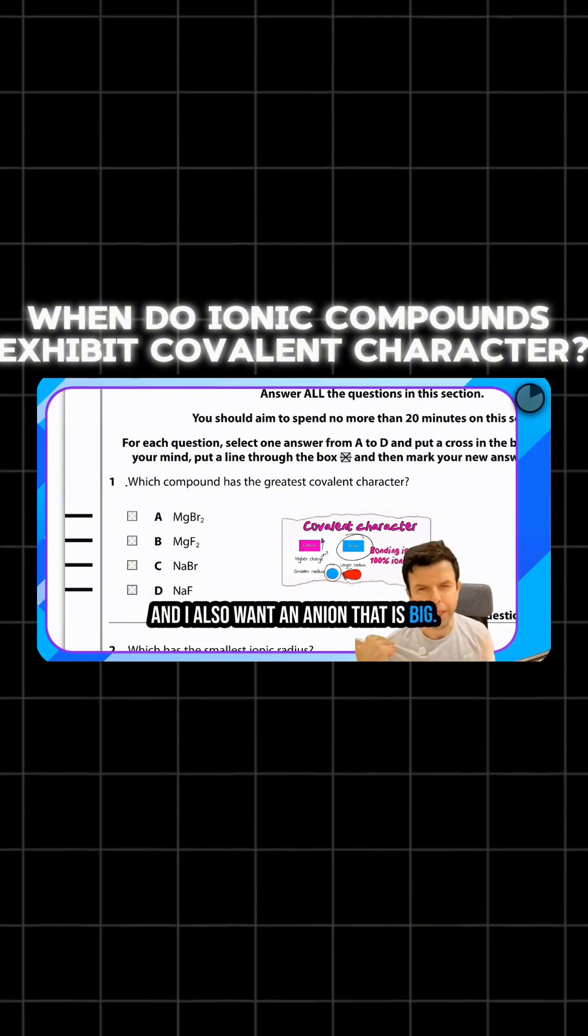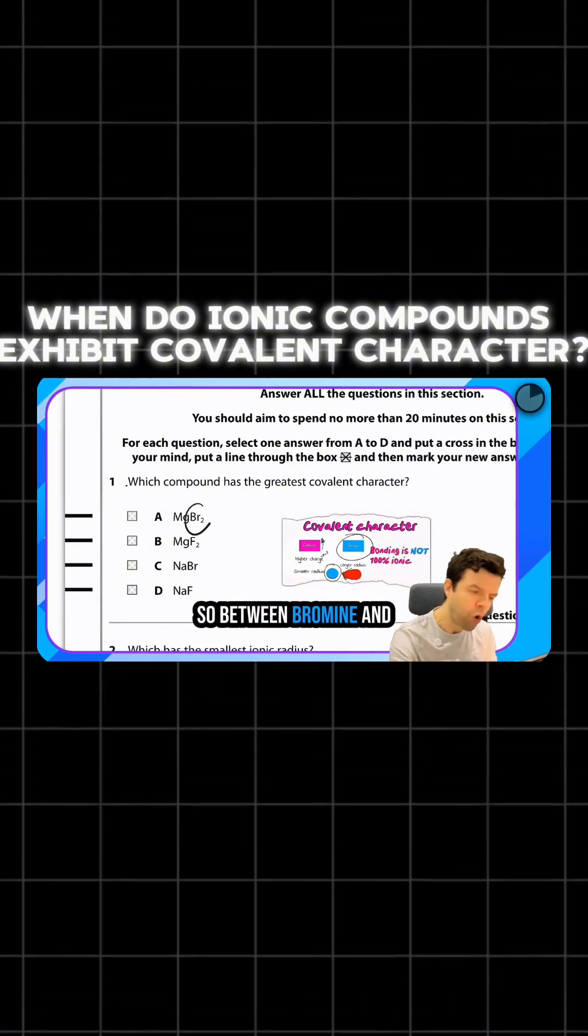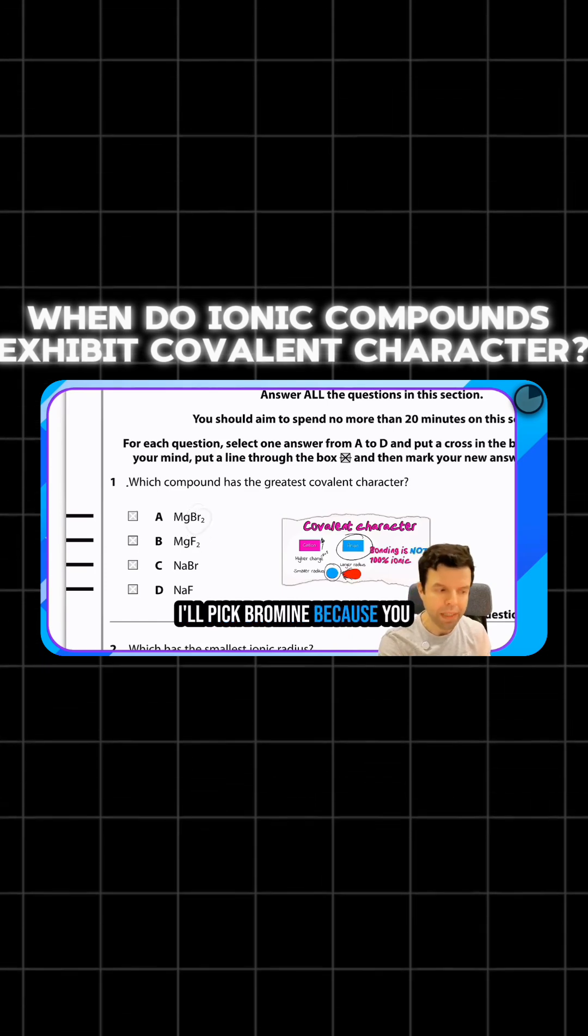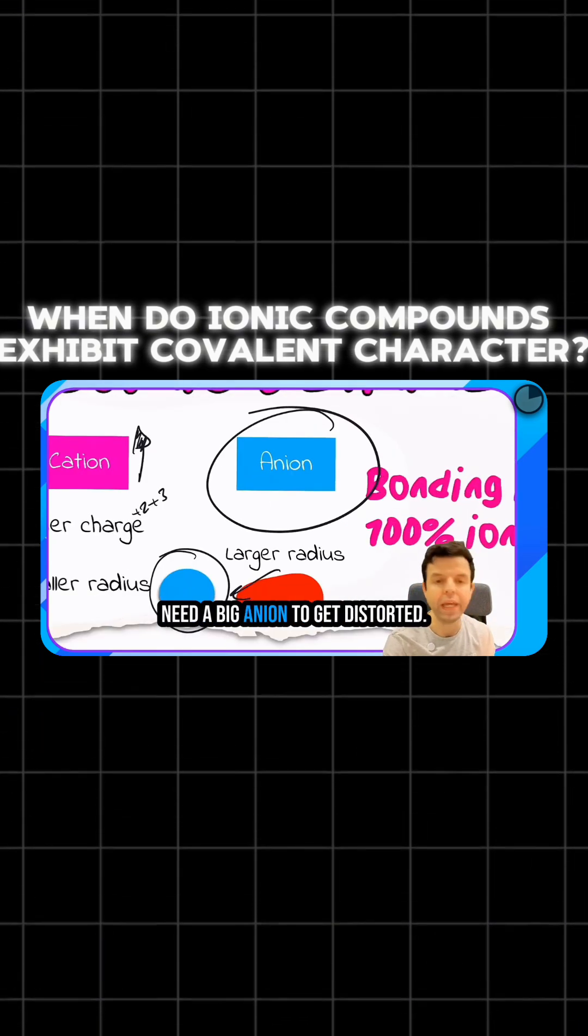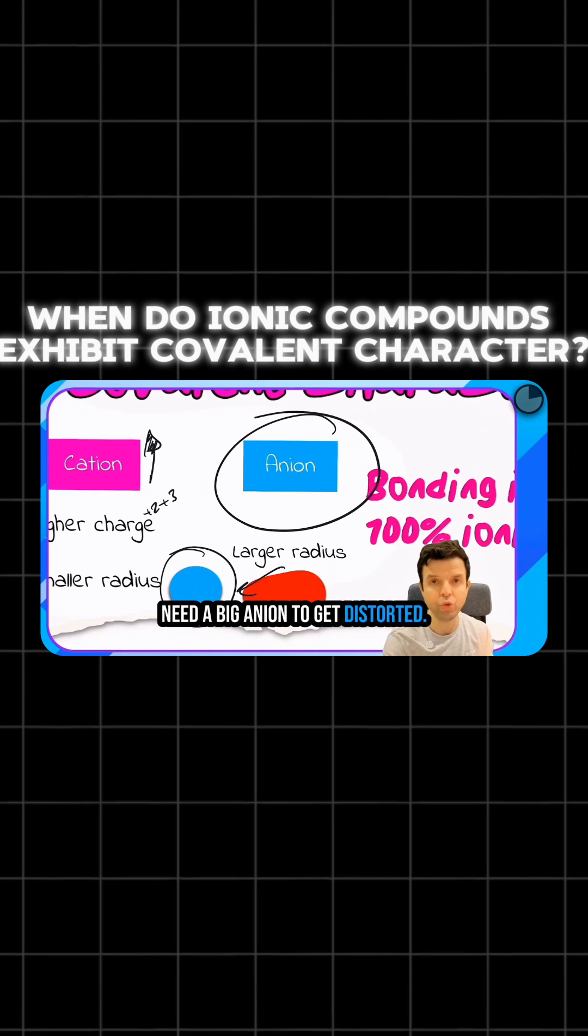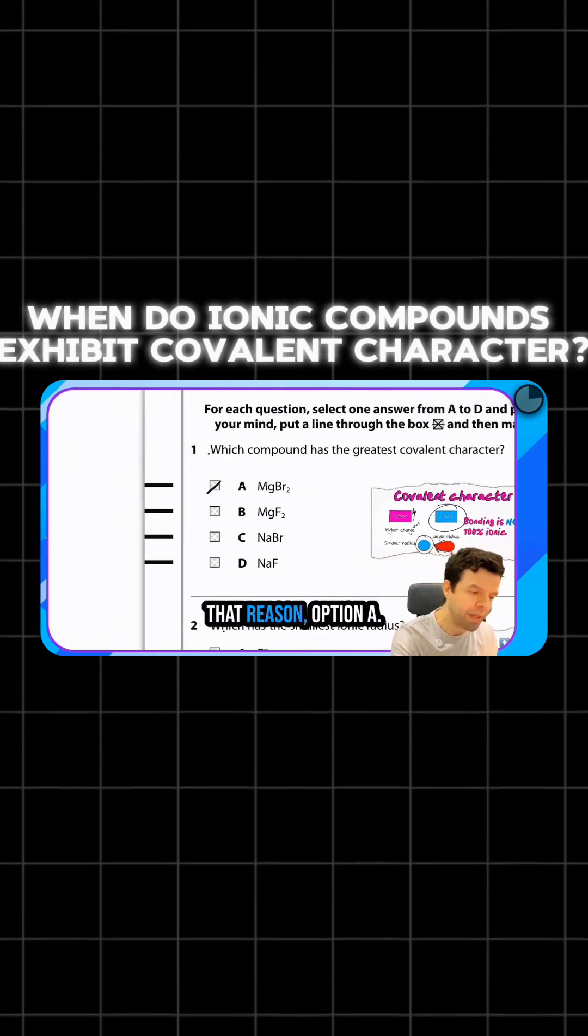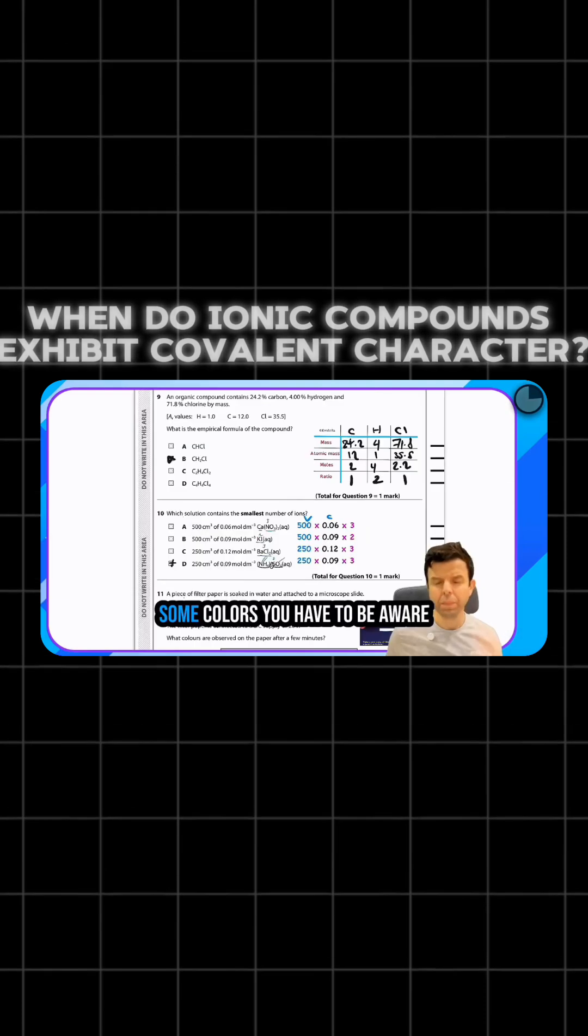Between magnesium and sodium, I'll pick magnesium because it's smaller and has two plus charge. Magnesium belongs to group two. I also want an anion that is big, so between bromine and fluorine, I'll pick bromine because you need a big anion to get distorted. So I'm going to pick option A for that reason.